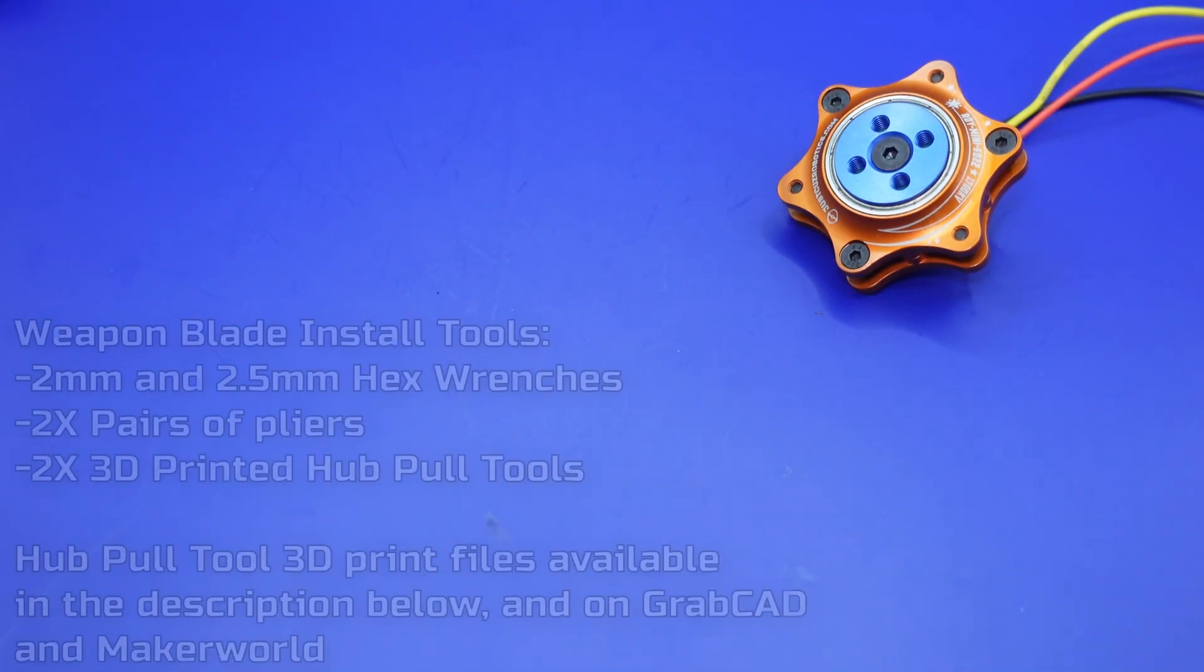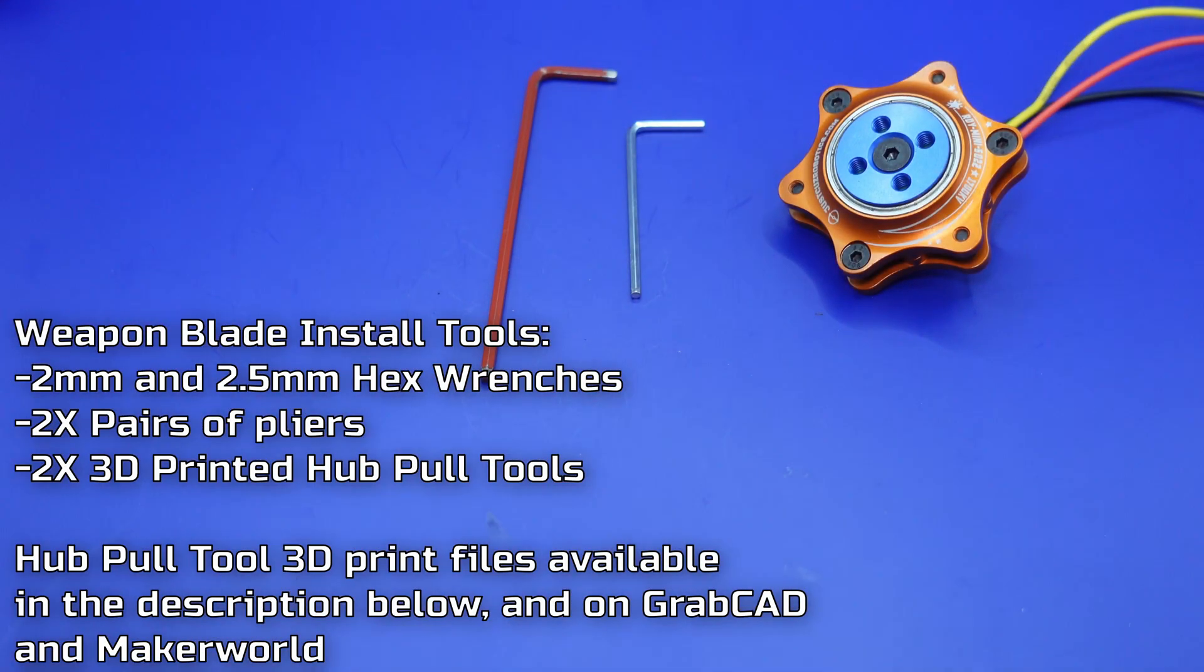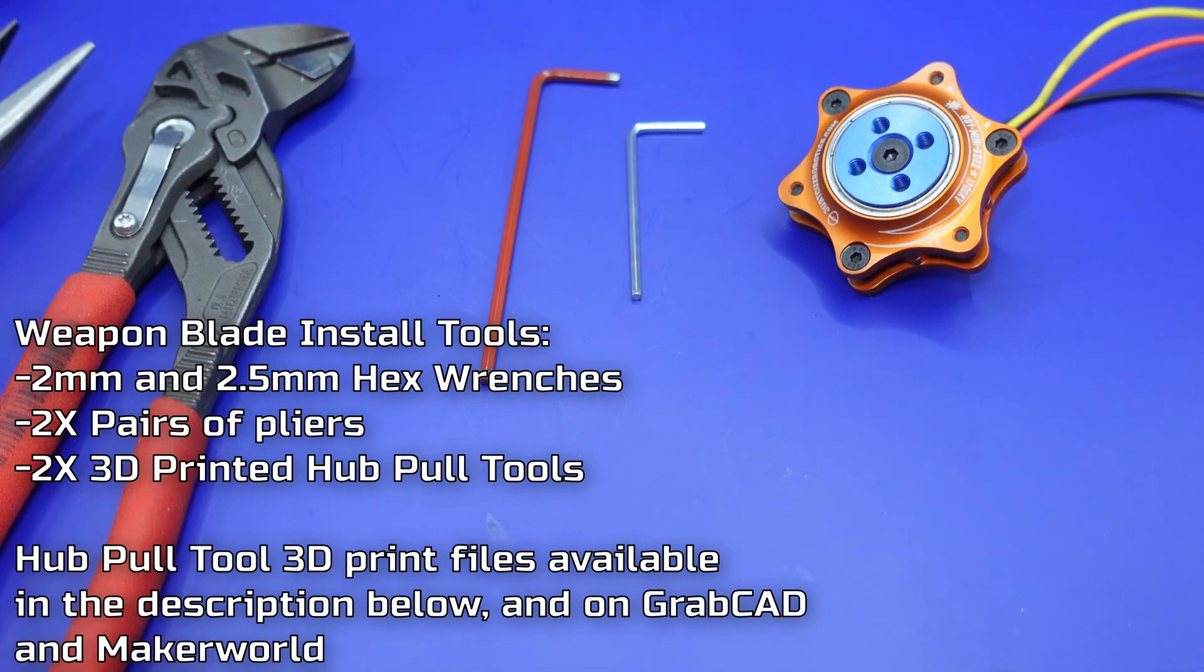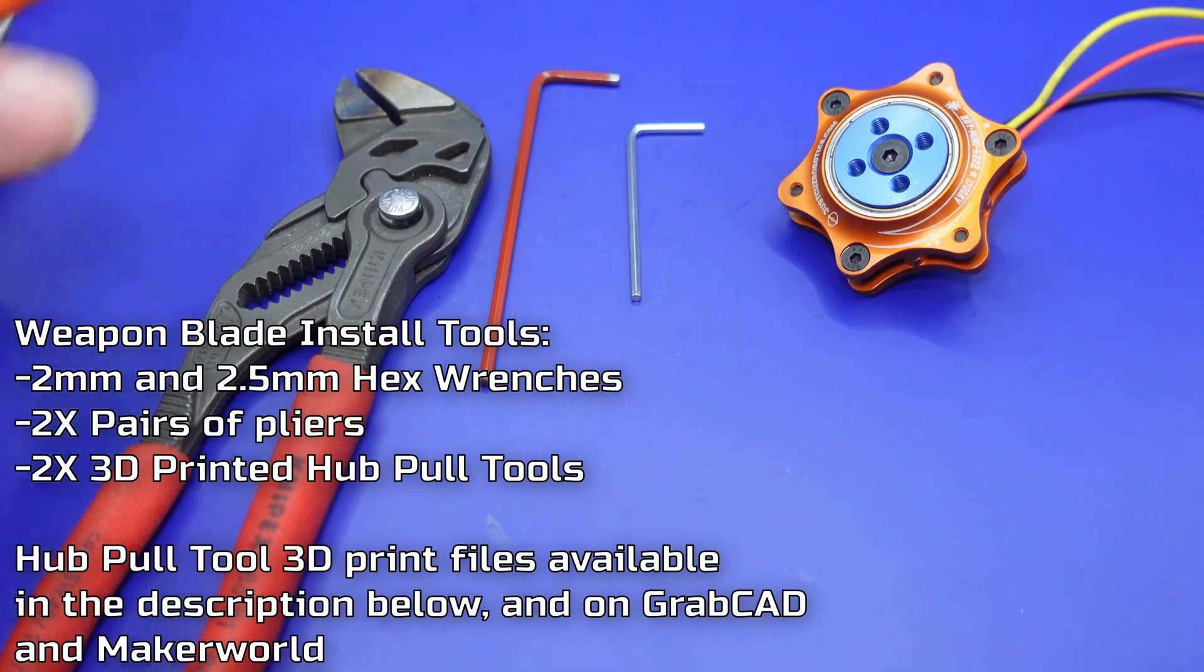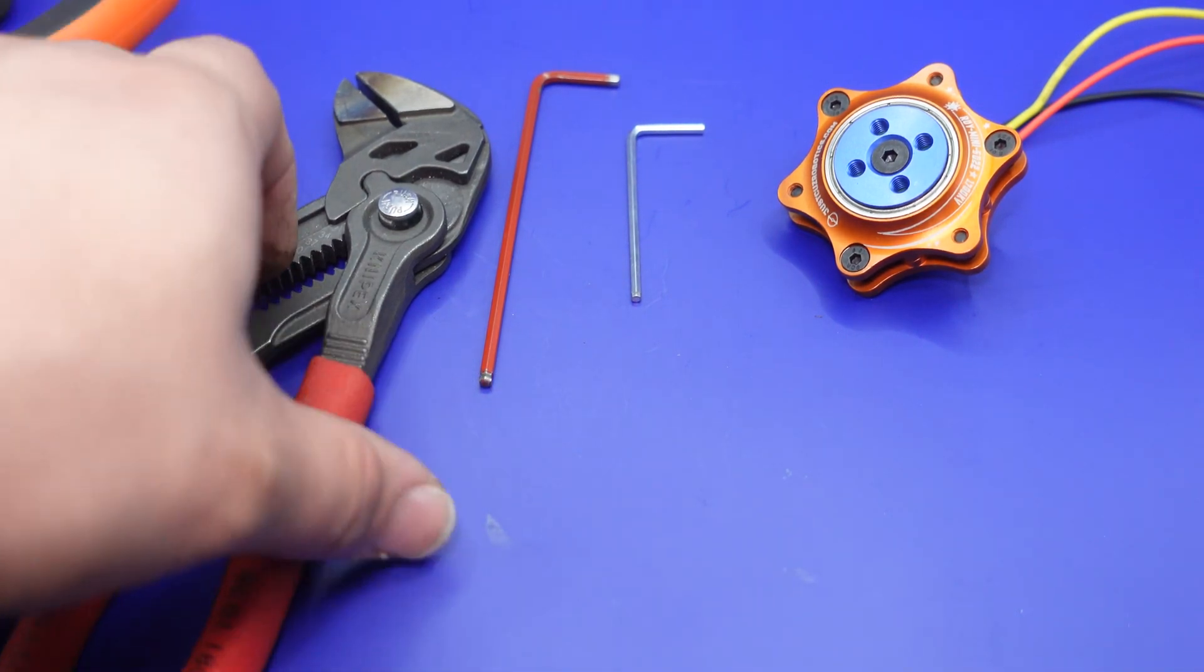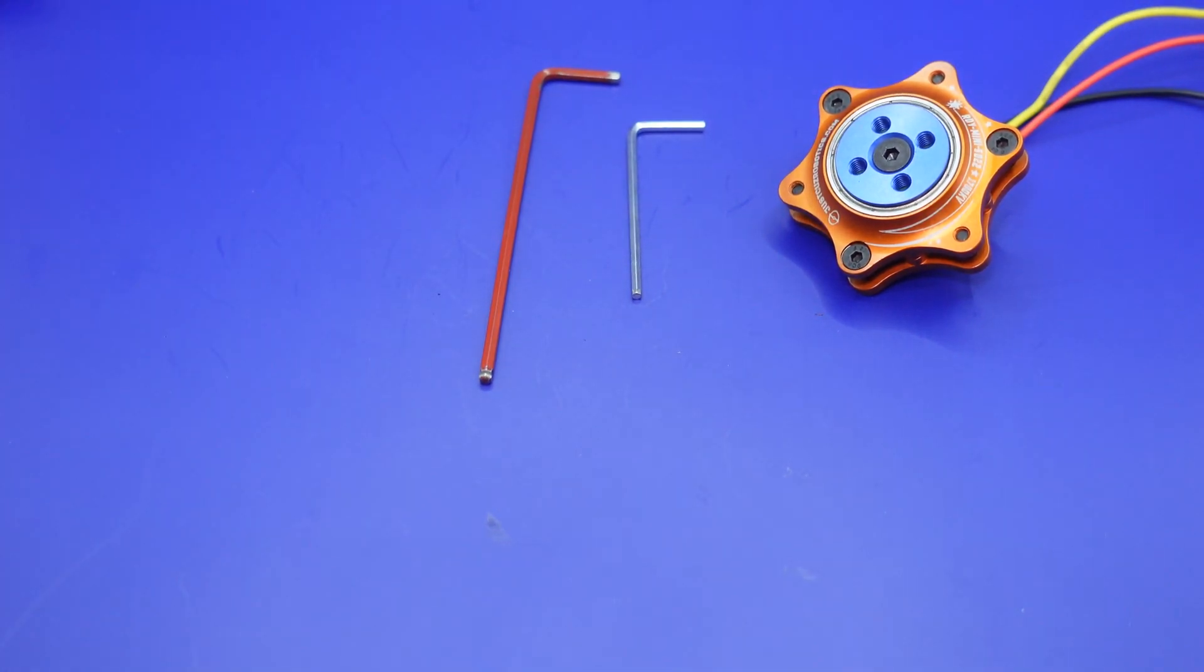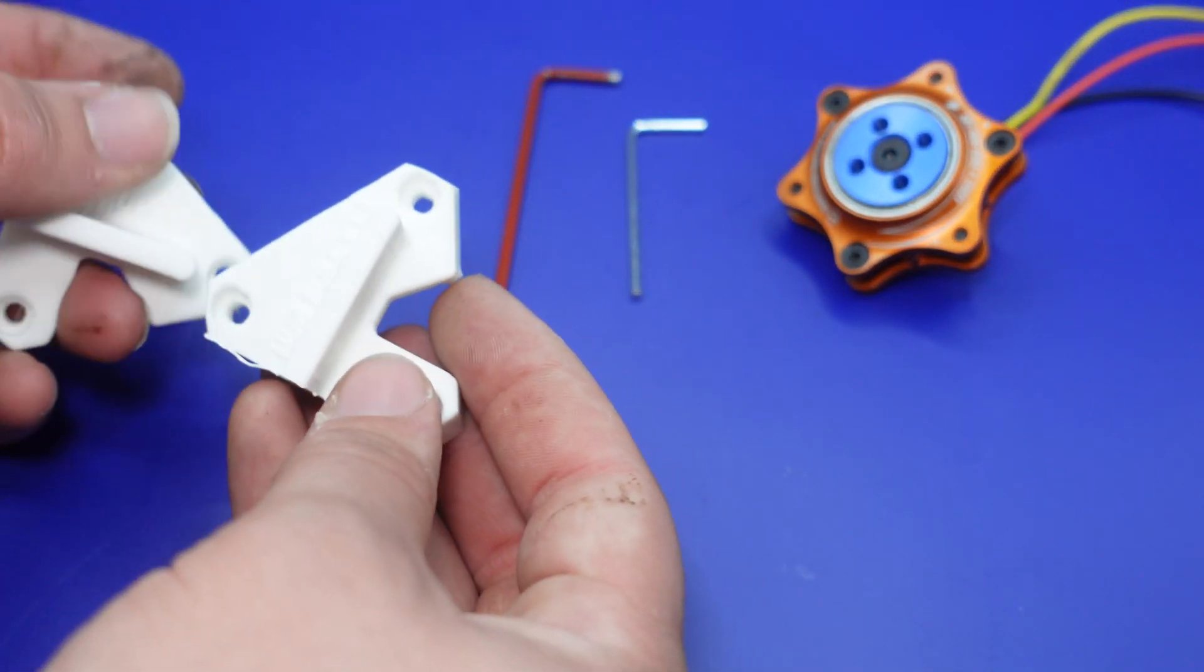You're also going to need a 2 millimeter hex wrench, a 2.5 millimeter hex wrench, and you're going to want two good sets of pliers. They could be needle nose and another needle nose. I really like these knife hacks that have parallel jaws. Anything that has parallel jaws will be great, but not 100% requirement. Those should work fine.